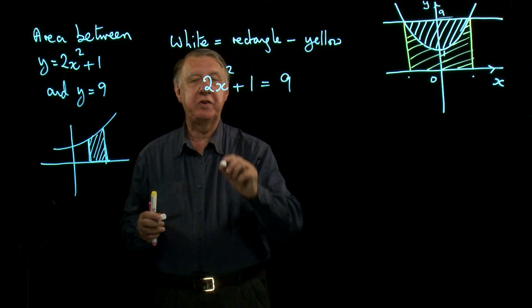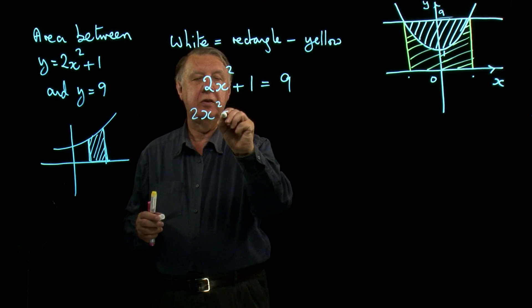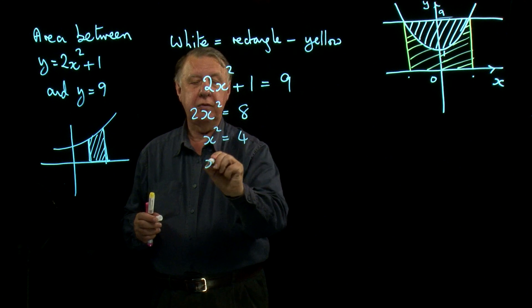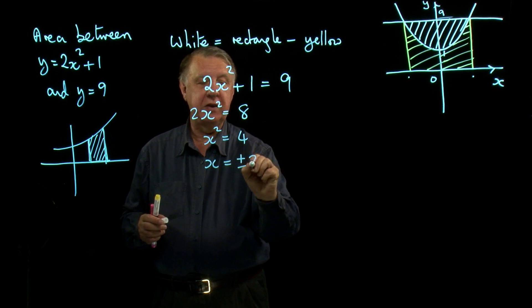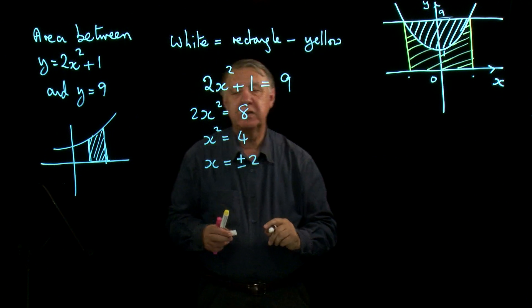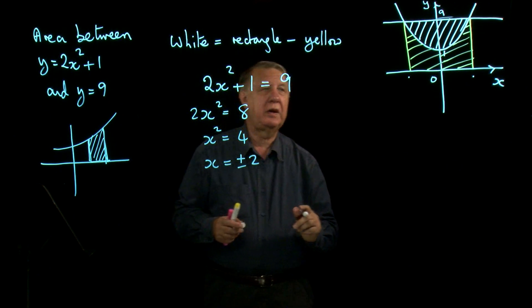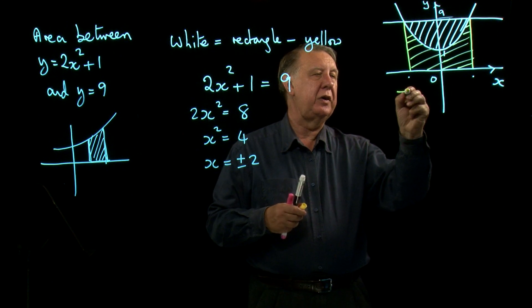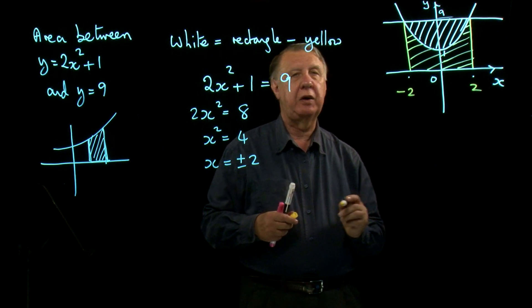So if we take one off each side, divide by 2, and of course remembering the plus or minus, we get that these two values here are minus 2 and plus 2.